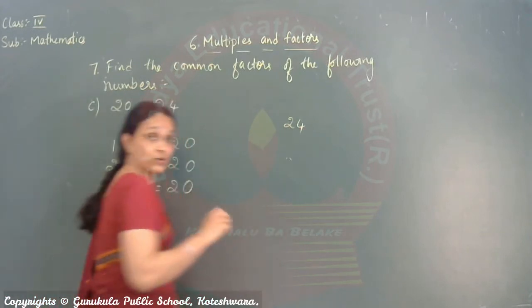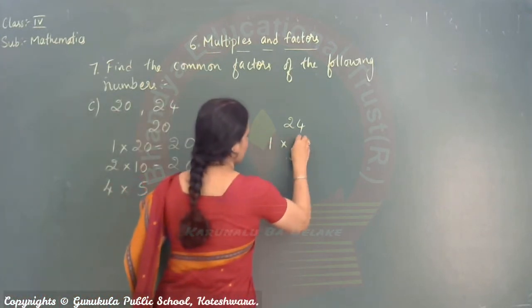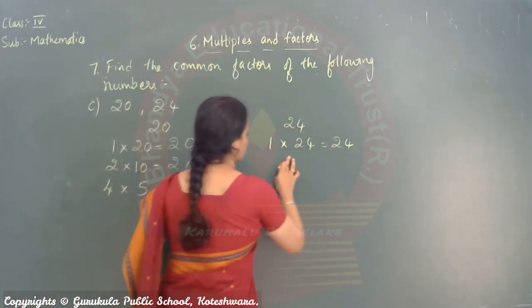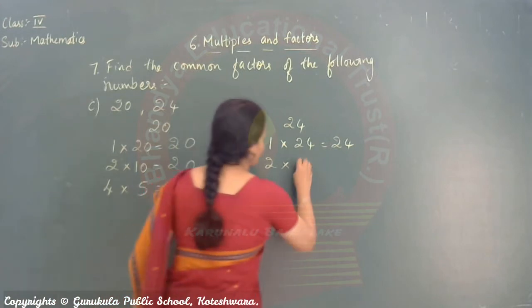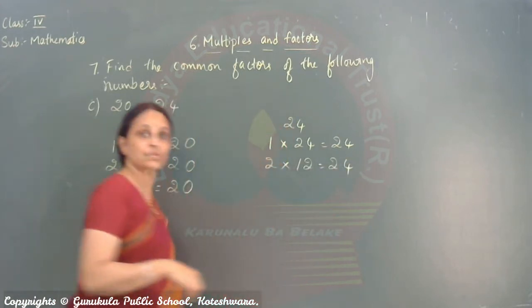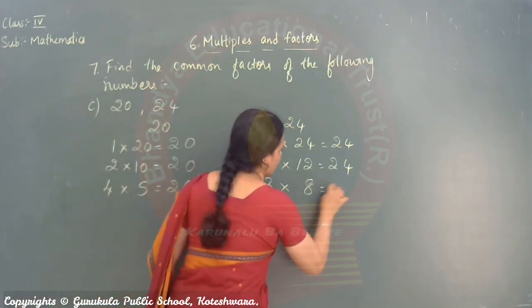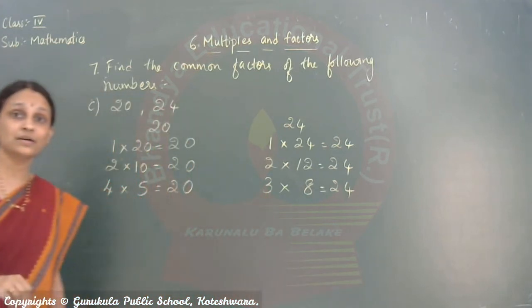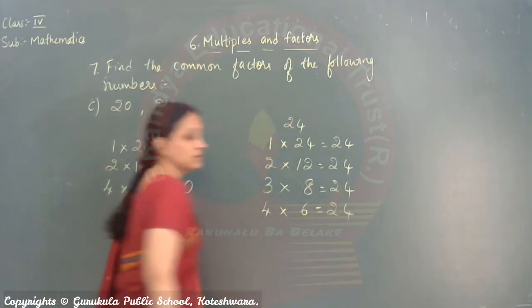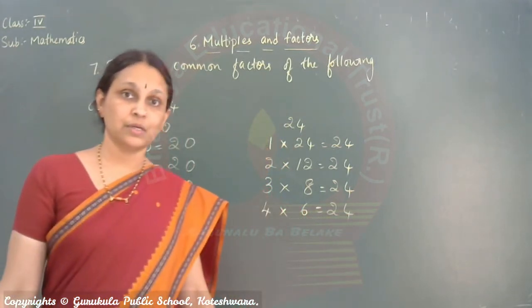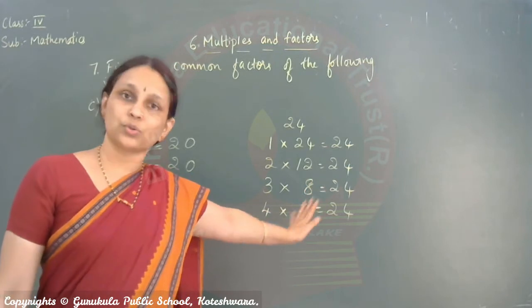24 factors. 1 times 24. 2 times 12. 3. How much? 3 times 8. 4. How much? 4 times 6. 5 tables. It will not come. 6 tables. 6 times 4. Again. It is repeated. So. Don't.